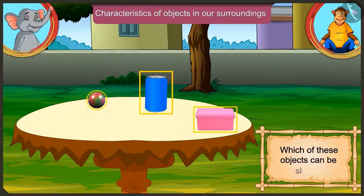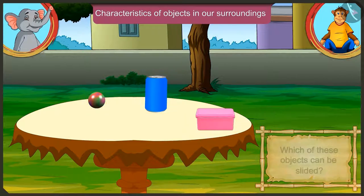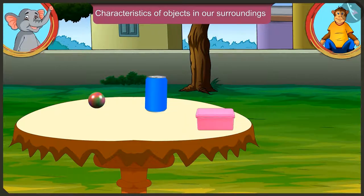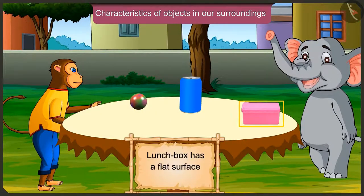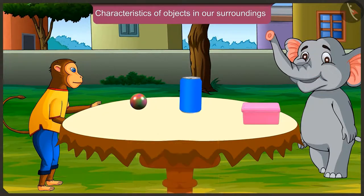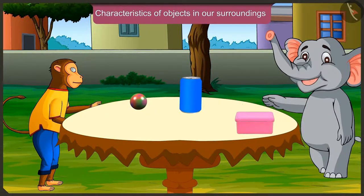Now tell me which of these objects can be moved. This is very simple. Look, this lunchbox has a flat surface. We cannot roll it like a ball. We can only slide it.